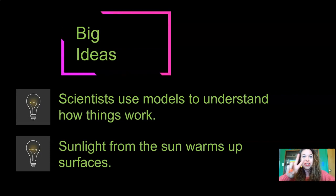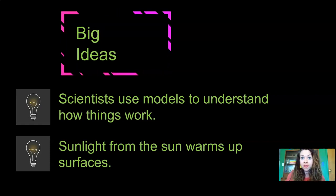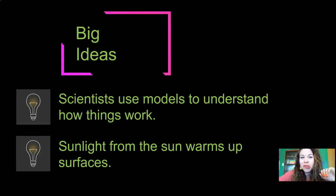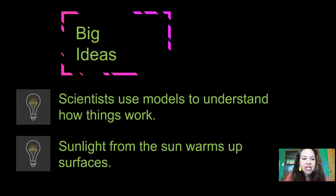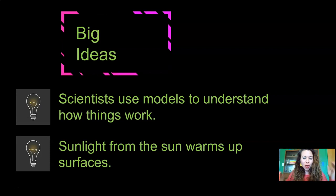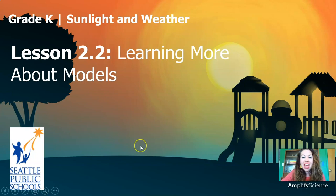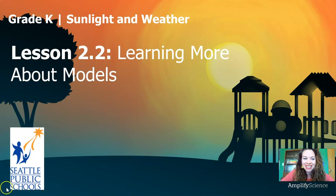Here are our two big ideas for today. Big idea number one: scientists use models to understand how things work. Big idea number two: sunlight from the sun warms up surfaces — we learned that by using our model. We are awesome scientists! That's it for Lesson 2.2, Learning More About Models. I'll see you next time for Lesson 2.3. Until then, stay safe and stay curious. I'll see you next time, scientists! Bye!